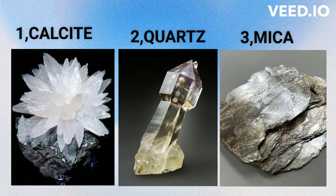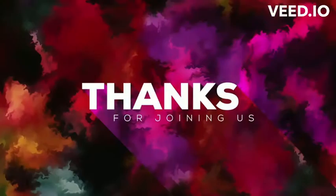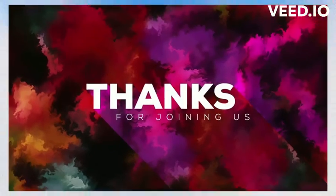In conclusion, isotropic minerals have uniform properties in all directions, while anisotropic minerals exhibit directional dependence in their properties, particularly in their optical behavior. Thank you for joining us today. Until next time, cheers!